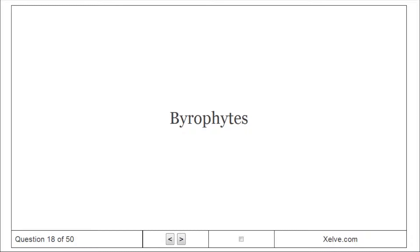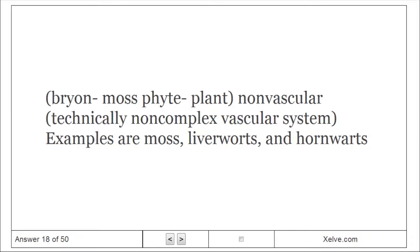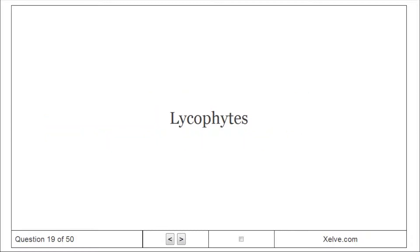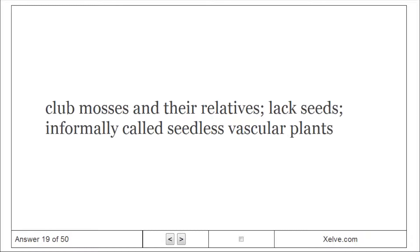Bryophytes: Non-vascular plants — technically with a non-complex vascular system. Examples are moss, liverworts, and hornworts. Lycophytes: Club mosses and their relatives; lack seeds, informally called seedless vascular plants.